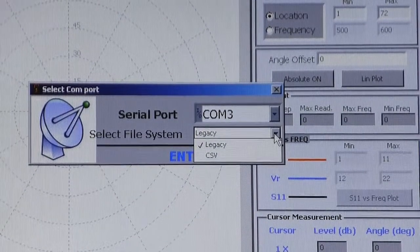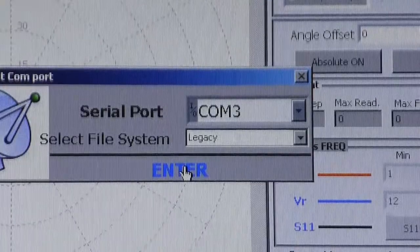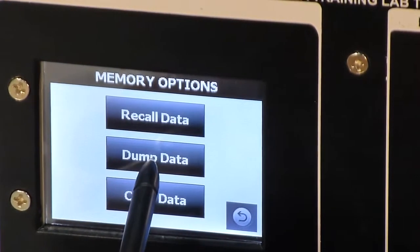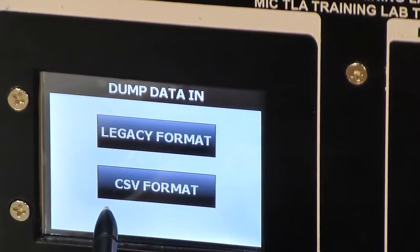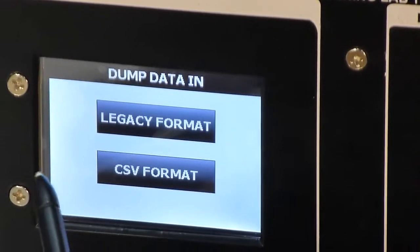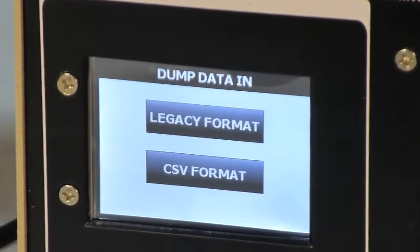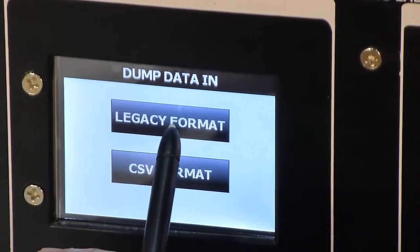Here we have two options, legacy or CSV format. Now press on enter button. Again on instrument, click on this memory button. You have few options available here like recall data, dump data or clear data. Now press on dump data. You will again see two options, legacy format or CSV format. Make sure you select the same format on the instrument and on the Polar Plot software. As we have selected legacy on the software, we will select the legacy format here.